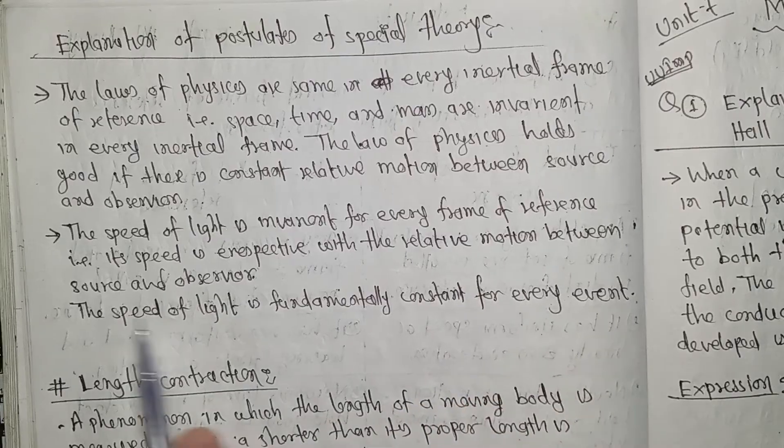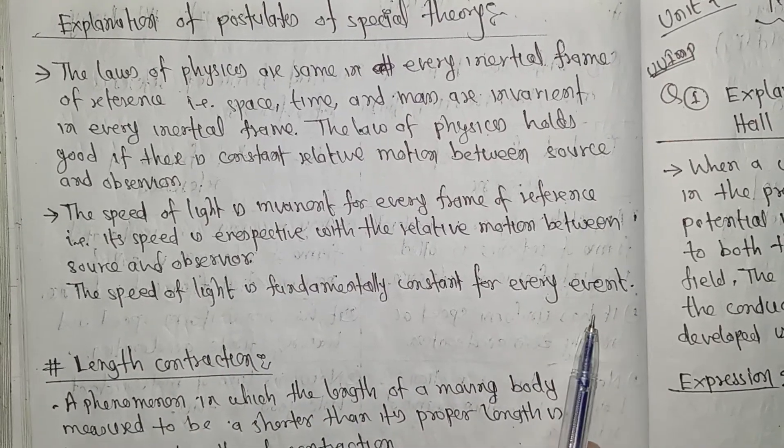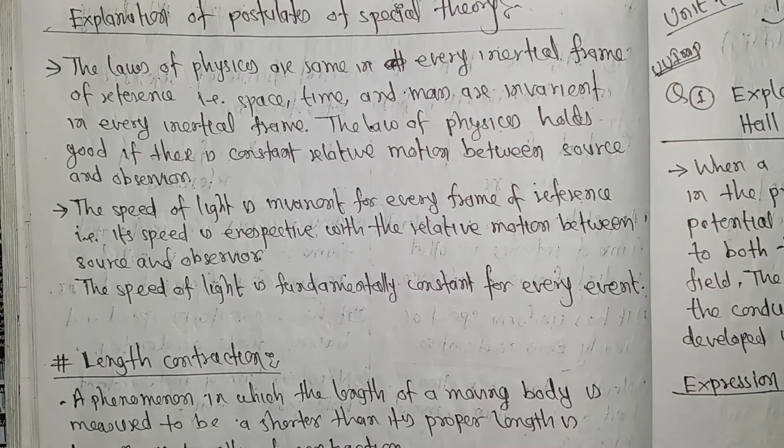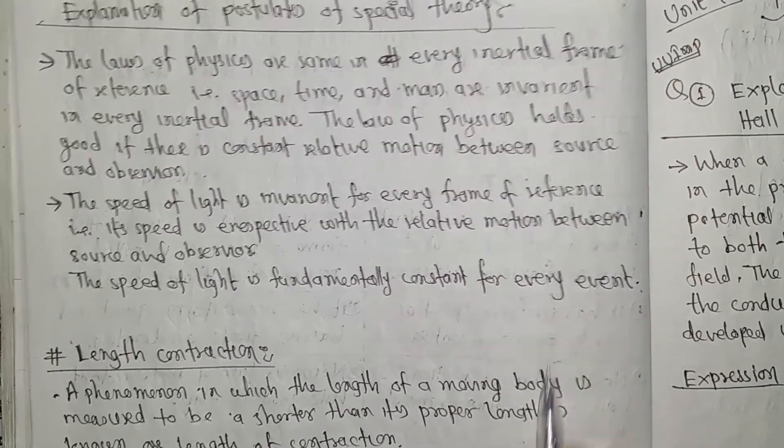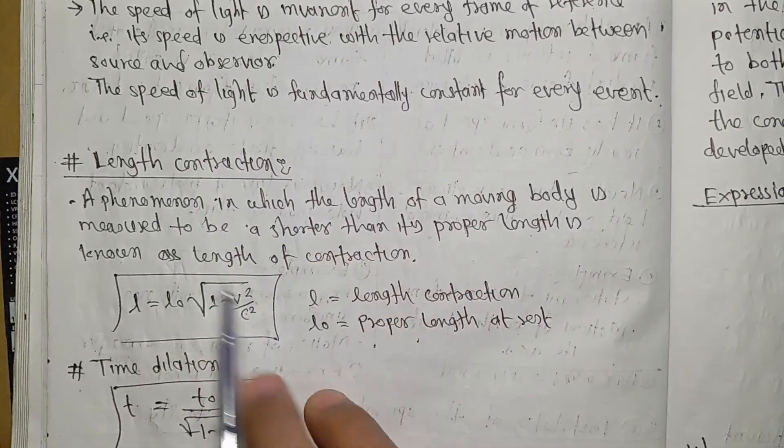The speed of light is invariant for every frame of reference. Its speed is irrespective of the relative motion between source and observer. The speed of light is fundamentally constant for every event.